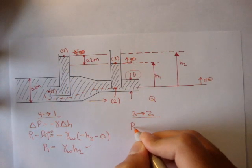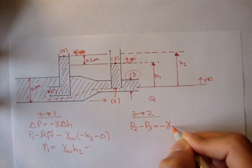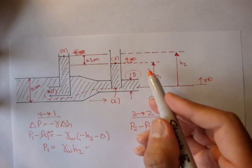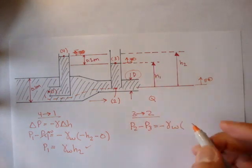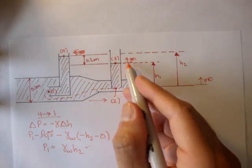So our pressure at two minus our pressure at three is equal to negative gamma of water. Our final height would be negative h1 minus zero because we started there.